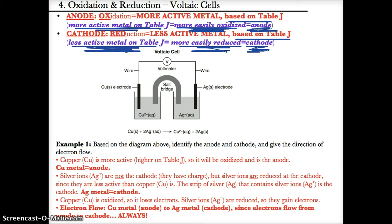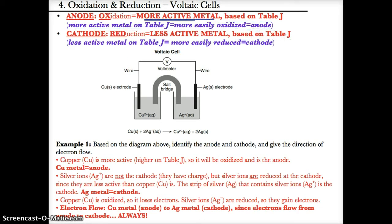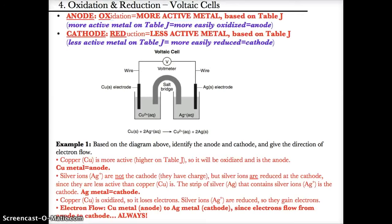To summarize: the more active metal, since it's more easily oxidized, will be the anode based on anox. The less active metal, since it's more easily reduced, will be the cathode based on red cat. Less active metal → reduction → cathode (red cat). More active metal → oxidation → anode (anox).